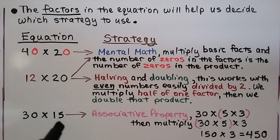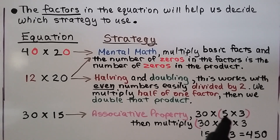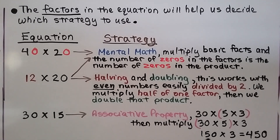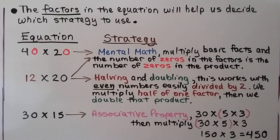We can use the associative property for 30 times 15. We can think of the 15 as 5 times 3, and regroup it to be 30 times 5 first. 30 times 5 is 150. We multiply that by 3 and get 450. So the factors can help us figure out which strategy would be the best or easiest one to use.